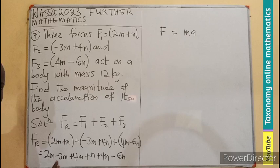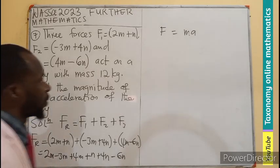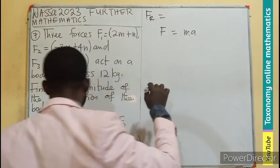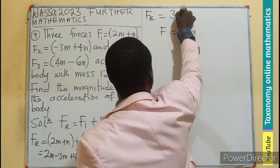So this is going to be 2 minus 3, that will be negative 1. Negative 1 plus 4, I believe that will give us 3. So in this case, our resultant force will be having the m to be 3m.